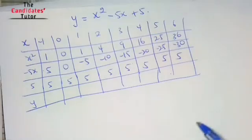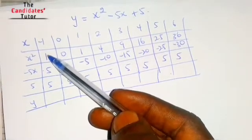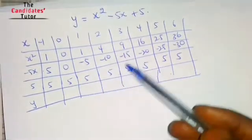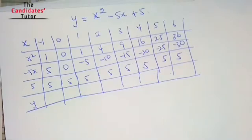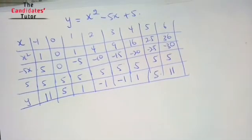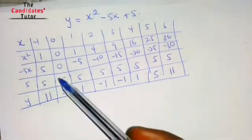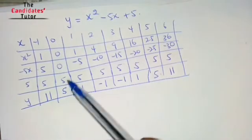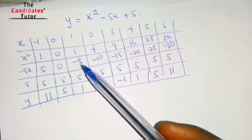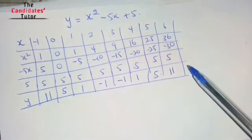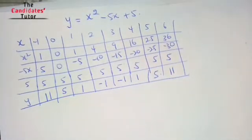To get y, add all three columns: x squared, negative 5x, and 5. The constant 5 does not depend on x, so we repeat 5 in every row. Adding the columns: 1 plus 5 plus 5 gives 11; 0 plus 0 plus 5 gives 5; 1 plus negative 5 plus 5 gives positive 1. Use your calculator to verify these results.